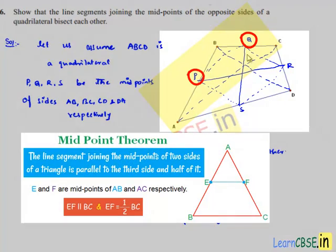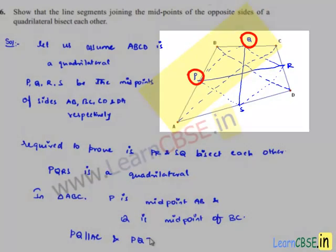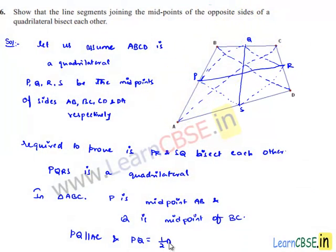Then by the midpoint theorem, we can say that PQ is parallel to AC and PQ equals half of AC. Let this be the first statement.